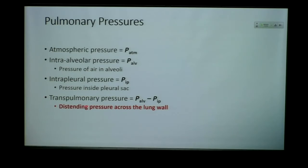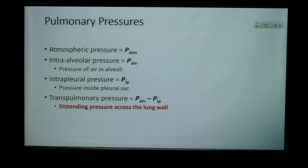Finally, there's the transpulmonary pressure, sometimes called the distending pressure. This is the difference between the pressure in our alveoli and the pressure in the intra-pleural cavity. It's very important that we have a difference in this pressure — these pressures should never be the same. This is the distending pressure across the lung wall that helps to keep our lungs inflated and prevent them from collapsing.